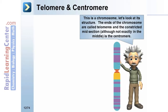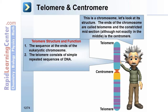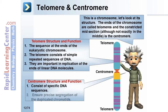Telomere and centromere: this is a chromosome — the ends of the chromosome are called telomeres, and the constricted midsection, although not exactly in the middle, is the centromere. The telomere consists of simple repeated sequences of DNA at the end of eukaryotic chromosomes, and they are important in replication of the ends of linear DNA molecules. The centromere consists of specific DNA sequences and ensures precise segregation of the duplicated chromatids.